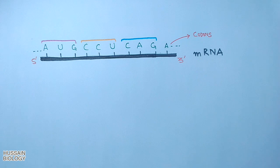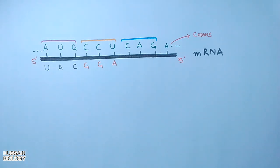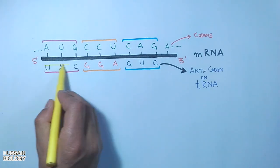Remember, this all is going within the ribosome. For these codons, there are specific tRNA molecules having anticodons. For AUG codon we have UAC anticodon on tRNA, for CCU codon we have GGA anticodon, and for CAG codon we have GUC anticodon.